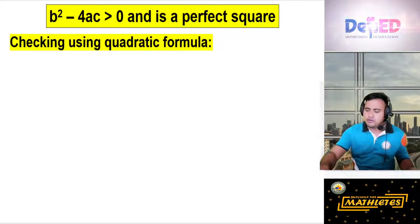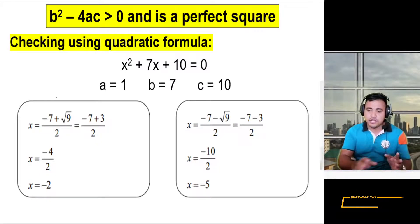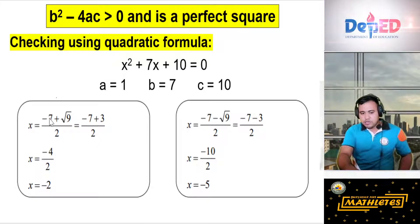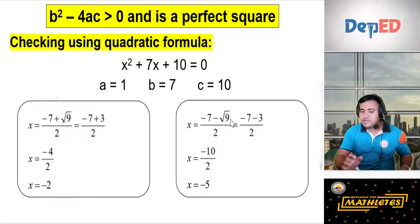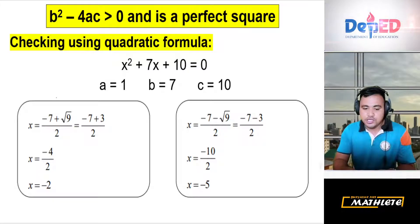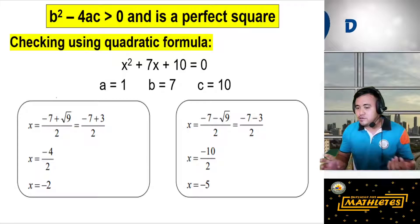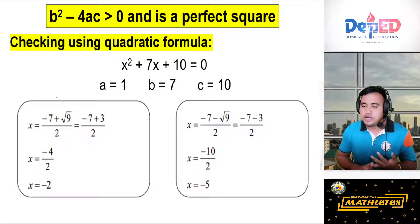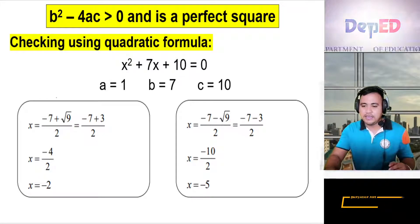We can verify using the quadratic formula: x = (−7 ± √9) / 2. This gives x = (−7 + 3)/2 = −2 and x = (−7 − 3)/2 = −5. The roots are indeed real, rational, and unequal.